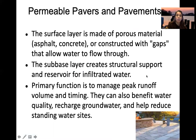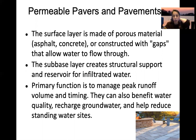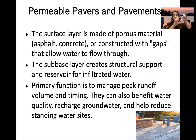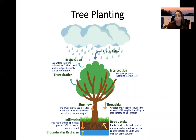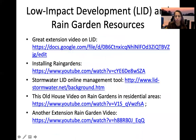Permeable pavements and pavers have a porous surface layer of asphalt or concrete, or are constructed with gaps to allow water through. They include a sub-base with a water catchment area underneath, with a layer of porous asphalt below. The primary function is to manage peak runoff, reduce standing water, and recharge groundwater. Tree planting also helps through evapotranspiration, canopy interception slowing stormwater, and root systems recharging groundwater.